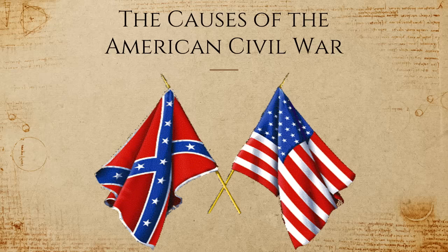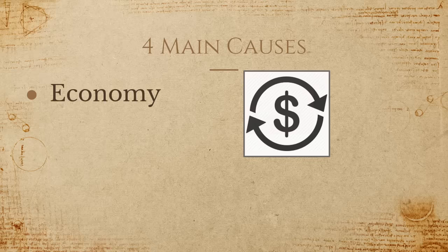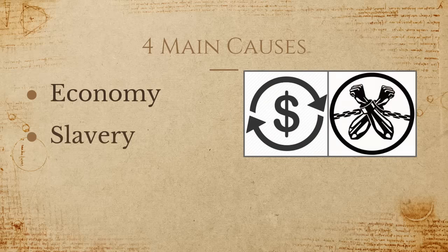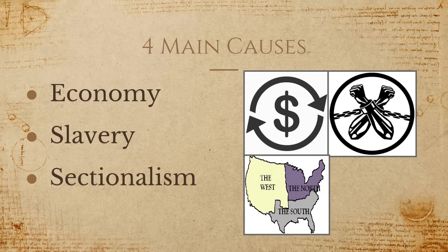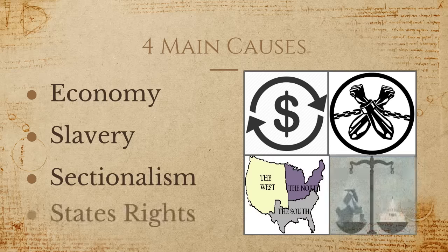The four big causes would be the difference between the economies of the North and the South, the question of slavery, sectionalism, and states' rights. I'll go through each one of them quickly and explain how they play a part in causing the American Civil War.